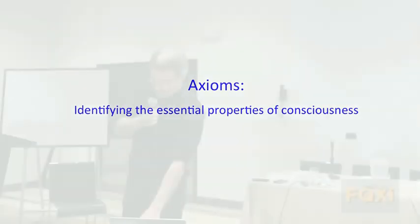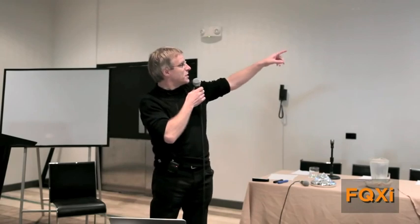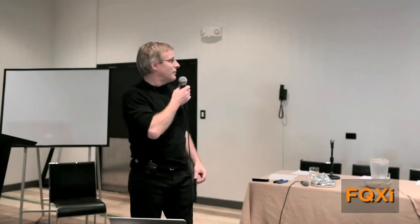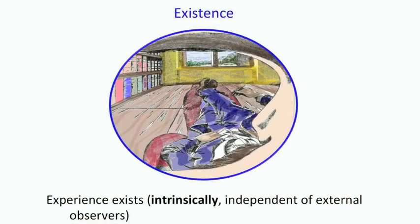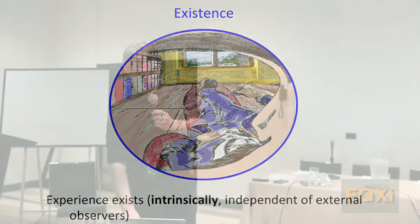And here are the axioms we currently think are crucial. And they are illustrated using a drawing colorized here by a physicist and phenomenologist, Ernest Mach, who shows his intrinsic perspective, looking at himself from one eye only. And the idea is that, as Descartes said and Christoph reminded us of, experience exists, you exist, you're having an experience. That's an undeniable fact, in fact the most undeniable fact of all, and everything else is inference. That's the first axiom.